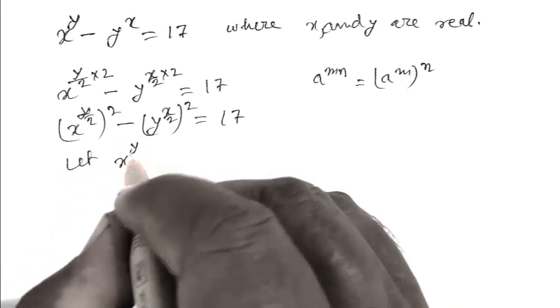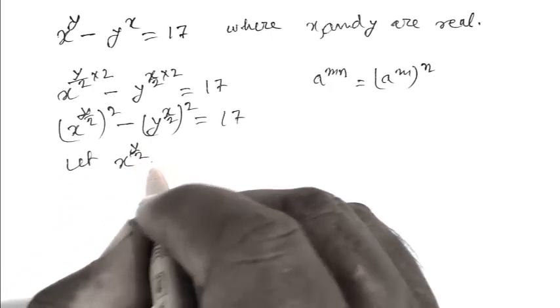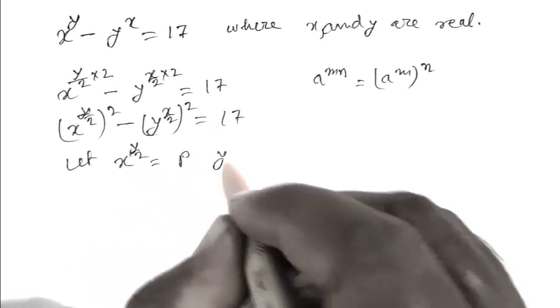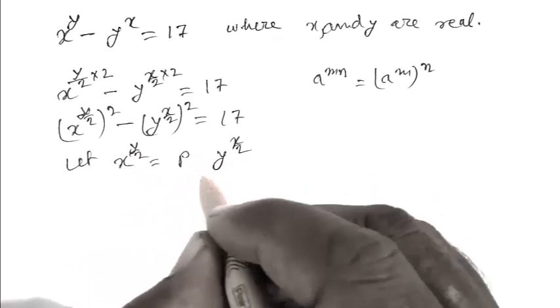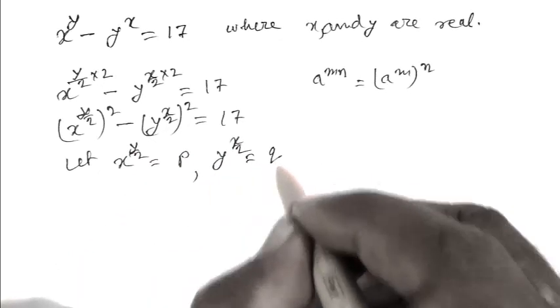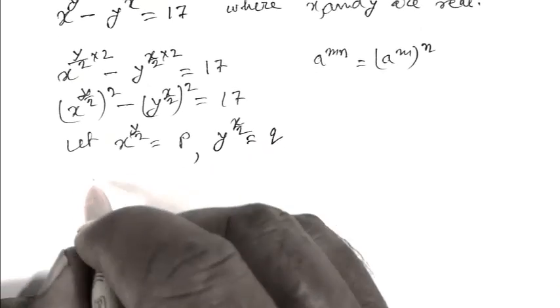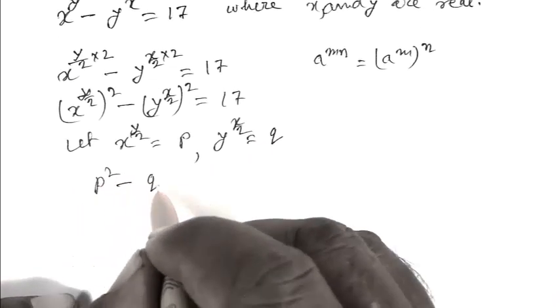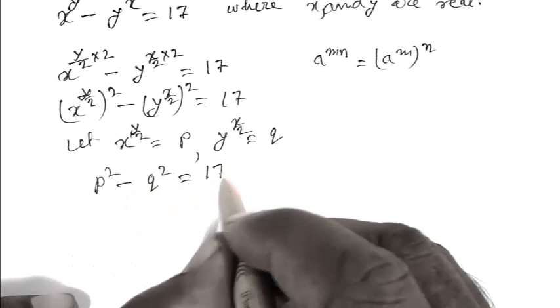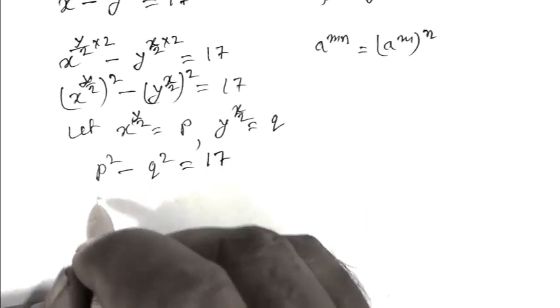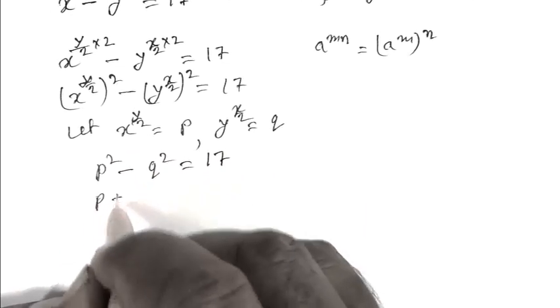So let x to the power y upon 2 equal to p, and y to the power x upon 2 equal to q. So we have p squared minus q squared equals 17.